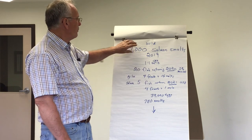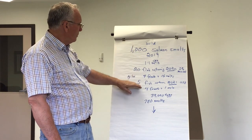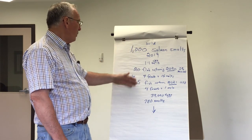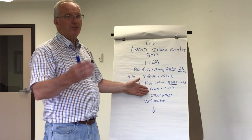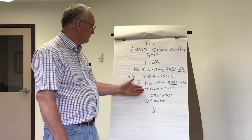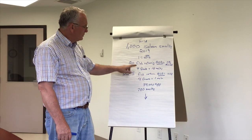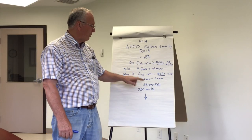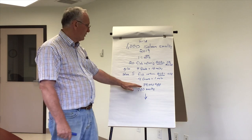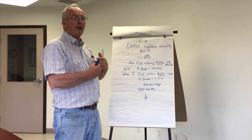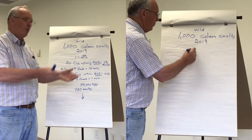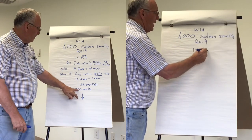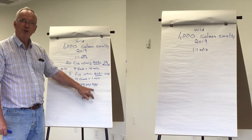So what you're going to get from that 1,000 smolts is probably 25 fish coming back, eight of them females and 17 males. Those eight females, grills and salmon, would produce about 39,000 eggs.